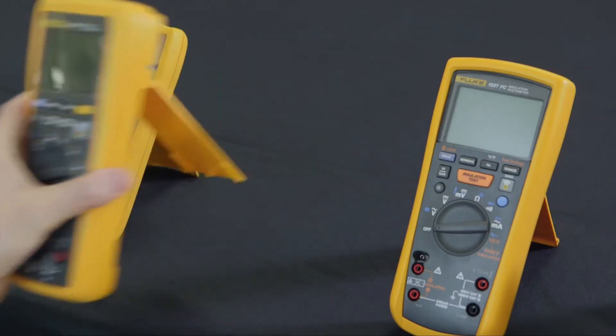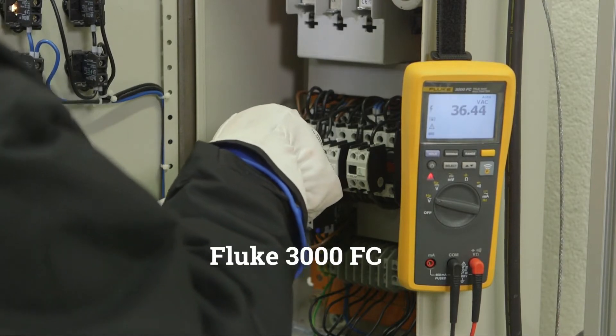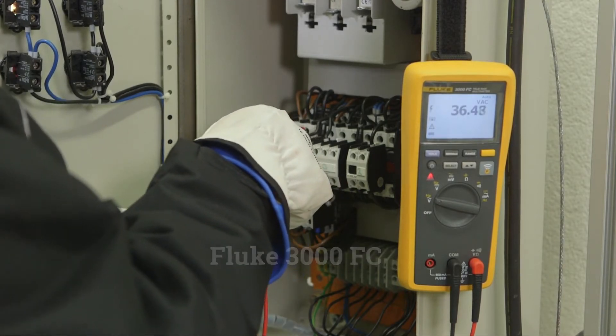The 3000 FC also measures up to 1000 volts AC or DC, and you can remotely read and share measurements on your smartphone.